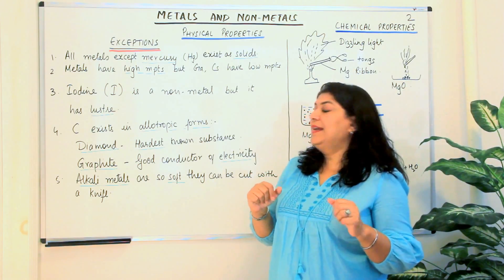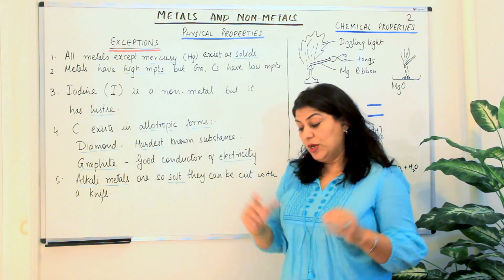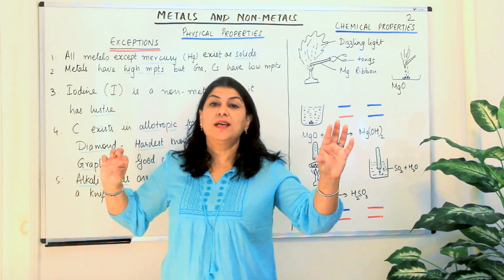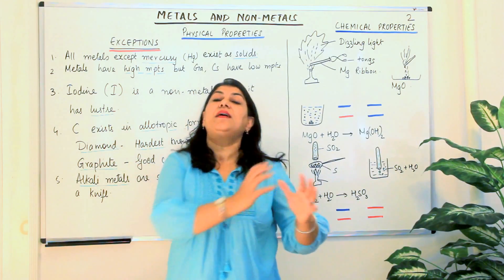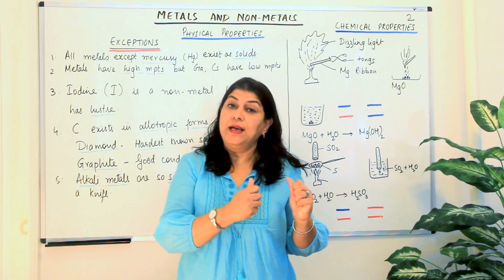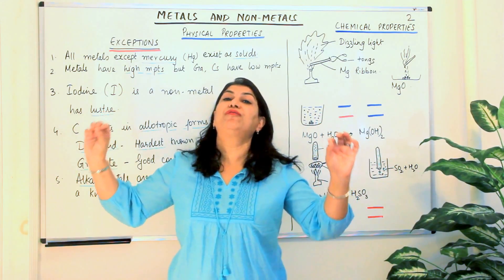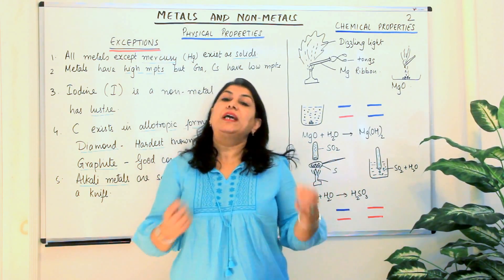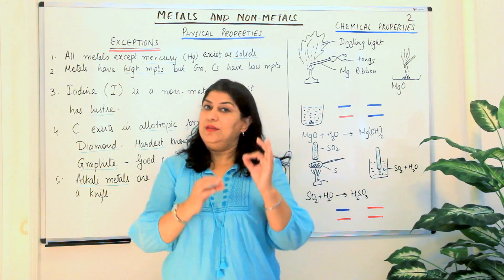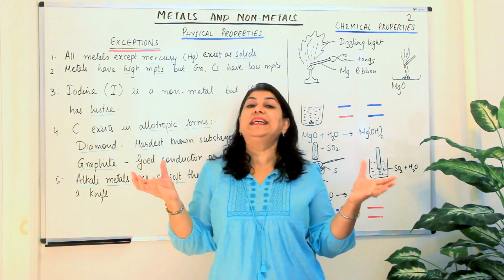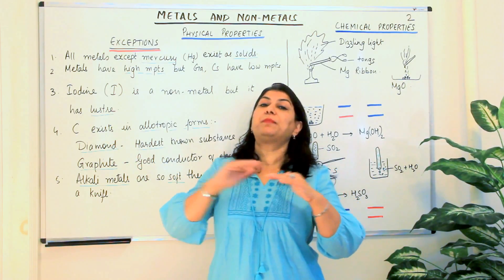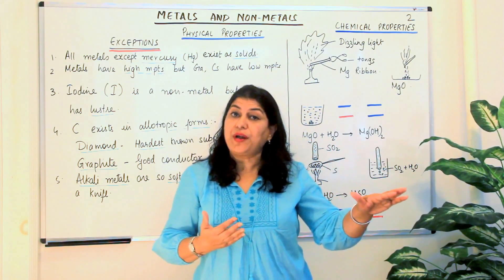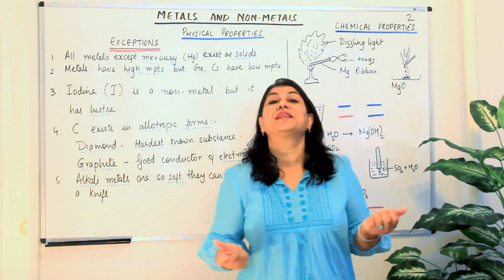The next exception is carbon, which exists in allotropic forms. Allotropes are the same element present in different forms because of a difference in the arrangement of atoms, due to which their physical properties differ. Chemically, allotropic forms are made up of the same element, so they will do the same reactions and make the same products. But physically, they have different physical properties.